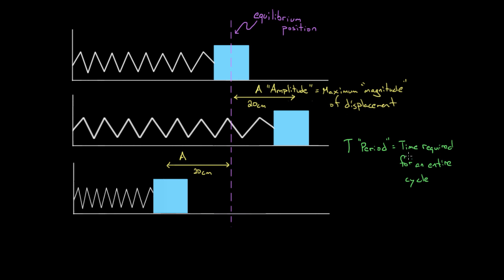So what does an entire cycle mean? What we mean is that you've got oscillations going on, and this process is repeating itself. If you start the mass over here, it's gonna eventually make it over to this end, goes over here, compresses the spring, and then it's gonna come back.